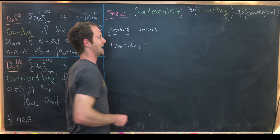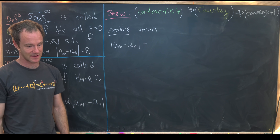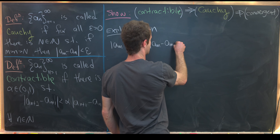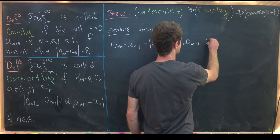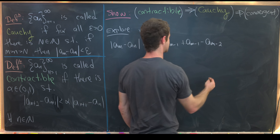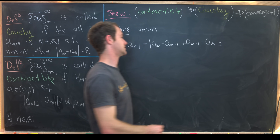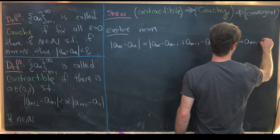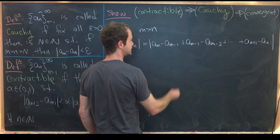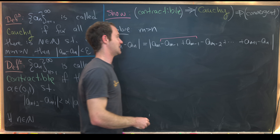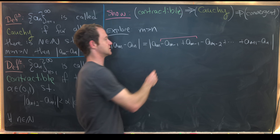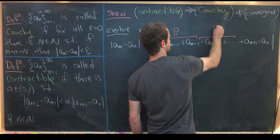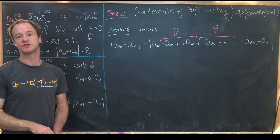We'll do that by adding and subtracting copies of the same thing — a telescoping approach. We rewrite |a_m - a_n| as |(a_m - a_{m-1}) + (a_{m-1} - a_{m-2}) + … + (a_{n+1} - a_n)|. The intermediate terms cancel in pairs, each adding to zero.